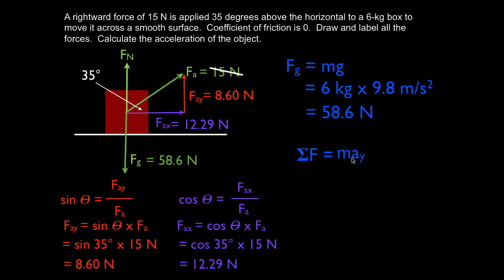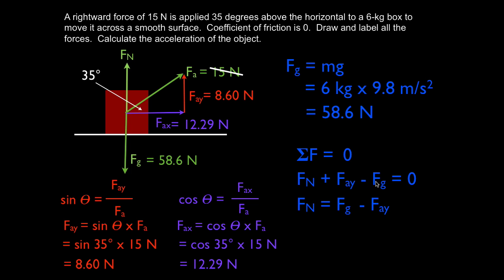The sum of forces in the y direction equals mass times acceleration in the y direction. The object is moving to the right — we're not lifting it up. With a weight of 58.6 Newtons and only an upward applied component of 8.6 Newtons, the acceleration in y is zero. So: normal force plus FAY minus FG equals zero, which gives FN equals FG minus FAY.